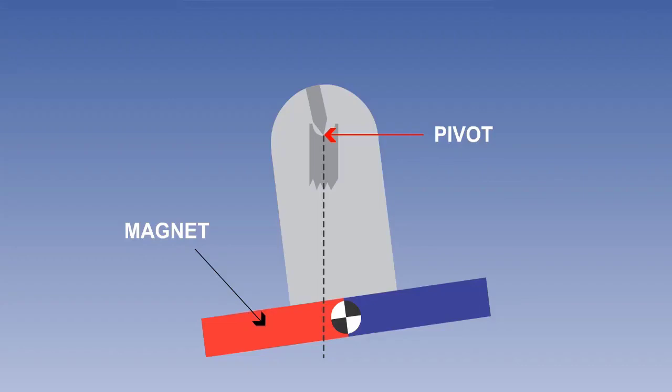Compass systems generally use a method of pendular suspension that ensures that the magnetic detector is as horizontal as possible, and is therefore more effective in sensing the horizontal component. This is discussed in more detail later.